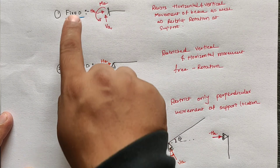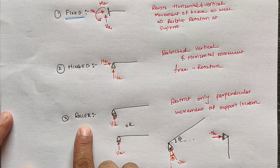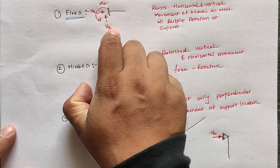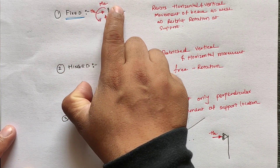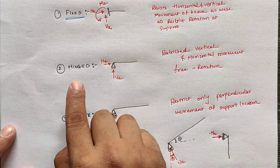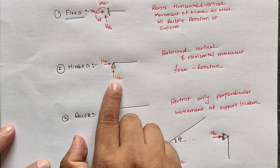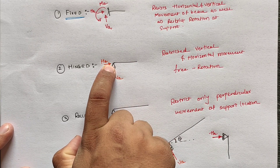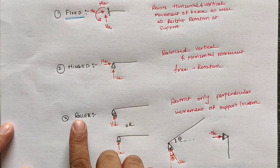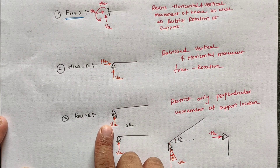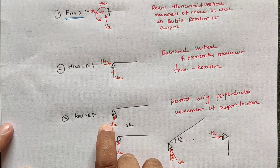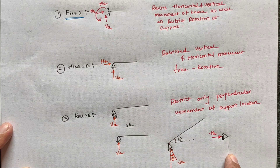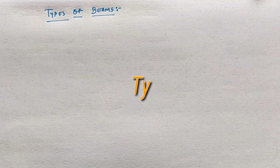To summarize the three types of support: fixed support has three reactions — vertical, horizontal, and moment; hinge support has two reactions — vertical and horizontal; and roller support has only one perpendicular reaction, which is always perpendicular to the beam or column.